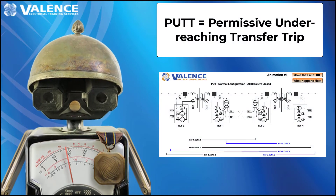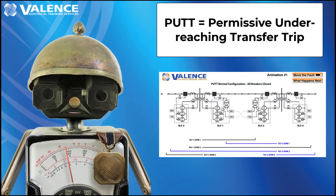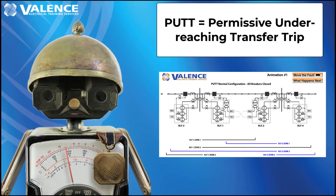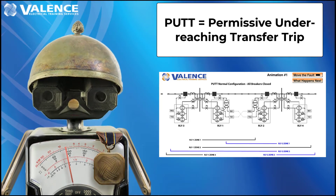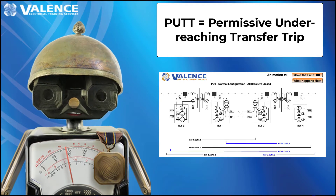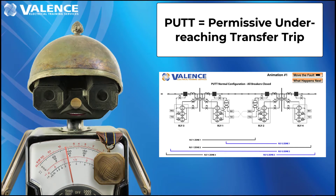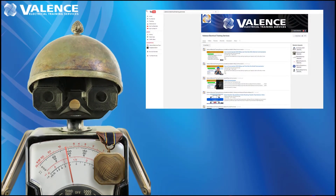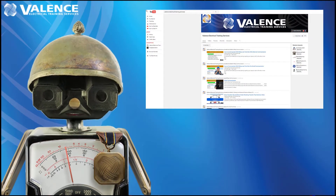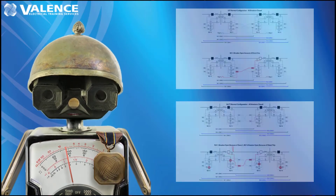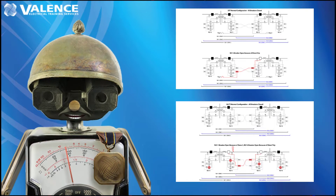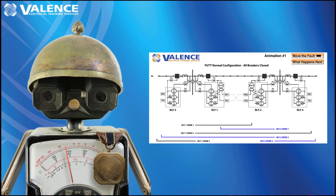Welcome to the fourth video in our end-to-end testing series. We'll be looking at a permissive underreaching transfer trip, or PUTT, communication-assisted trip scheme in this video. I'm going to assume that you've watched all the previous videos in this series, so I won't rehash what to look for in this animation. We talked about a DTT and DUTT teleprotection scheme in the previous video and we're talking about a PUTT scheme today.